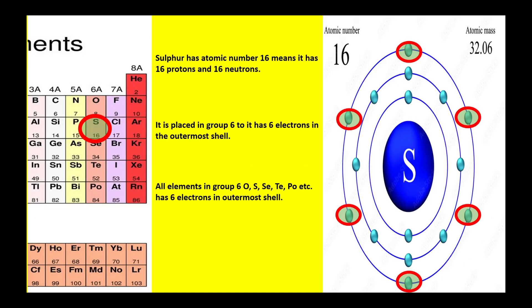Similarly, sulfur has the symbol S and is placed in group 6A with atomic number 16, so it has 16 electrons and 16 protons. As it is placed in group 6A, sulfur has six electrons in its outermost shell. On the right-hand side, the atomic structure shows the outermost shell electrons. All other elements in group 6A also have six electrons in their outermost shell.